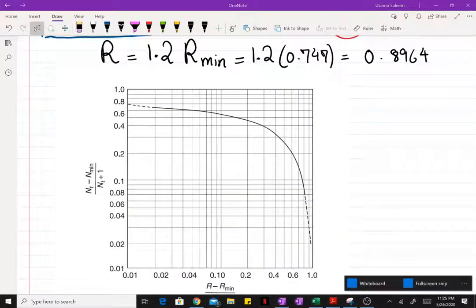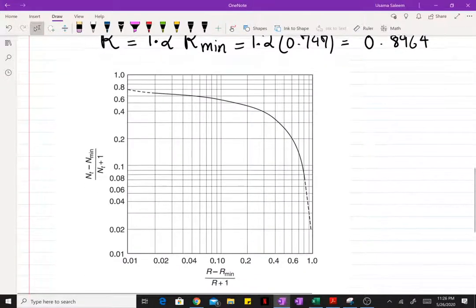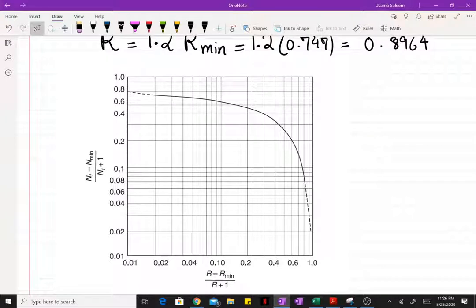Now the Gilliland correlation, as I've shown here, it's a graphical correlation that's based on experimental data. There are other experimental data that you can use to find the number of theoretical stages, but this one's the most popular.